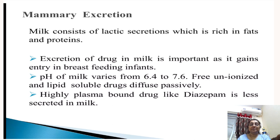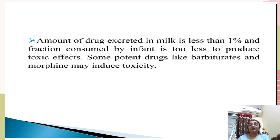Mammary secretion: milk consists of lacteal secretion rich in fat and protein. Excretion of drugs in milk is important as the drug can enter a breastfeeding infant. The pH of milk varies from 6.4 to 7.6. Free, unionized, and lipid-soluble drugs diffuse passively. Highly plasma-bound drugs like diazepam are less secreted in milk. The amount of drug excreted in milk is less than one percent, and the fraction consumed by the infant is generally too small to produce toxic effects, though potent drugs like barbiturates and morphine may induce toxicity.